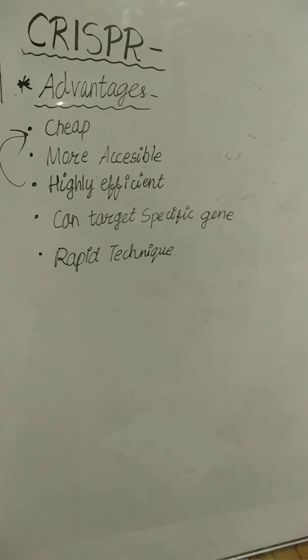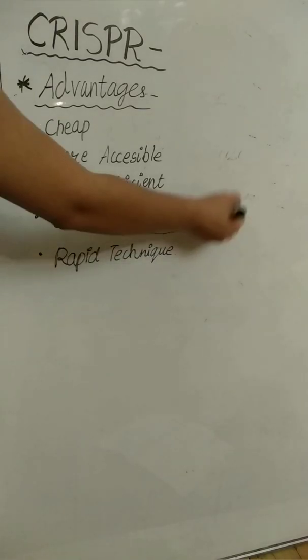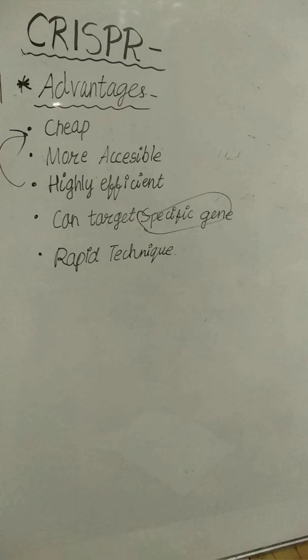So what are the advantages of CRISPR? Advantages of CRISPR over older techniques of DNA breaks. First advantage is it is cheap, more accessible, highly efficient, and can target specific genes. It targets specific genes, not random genes, and this is a rapid technique.